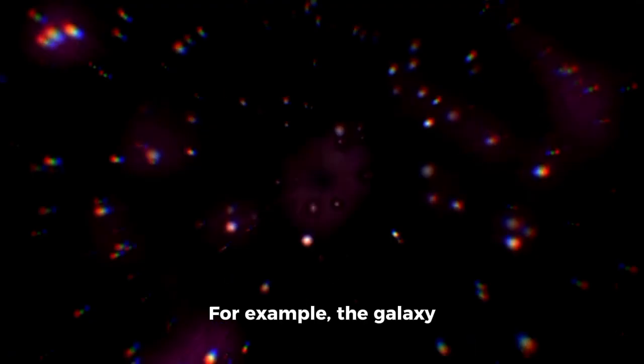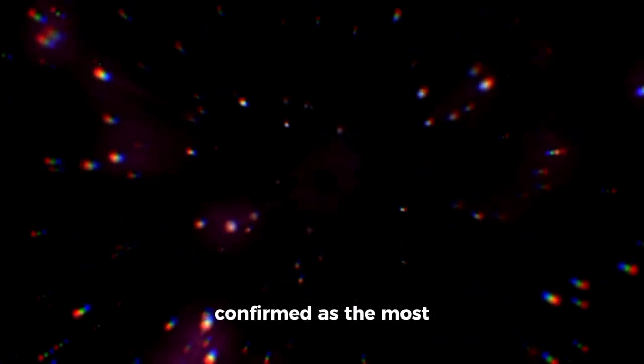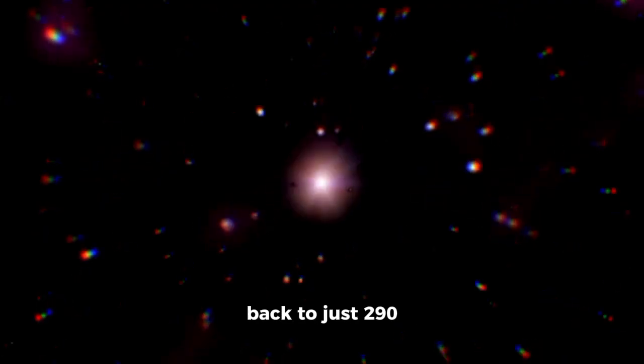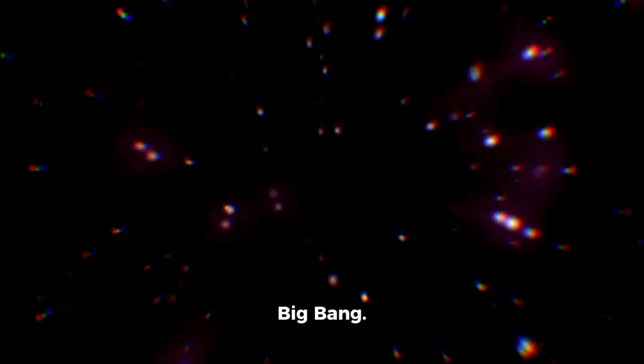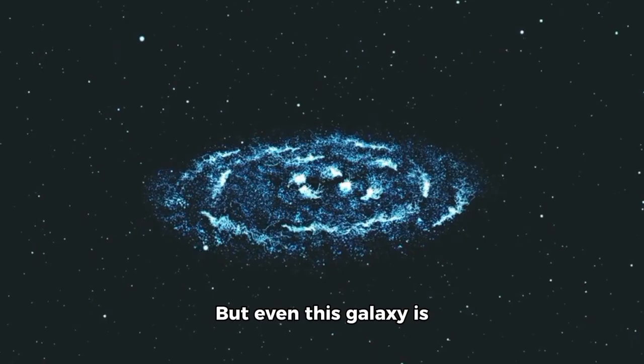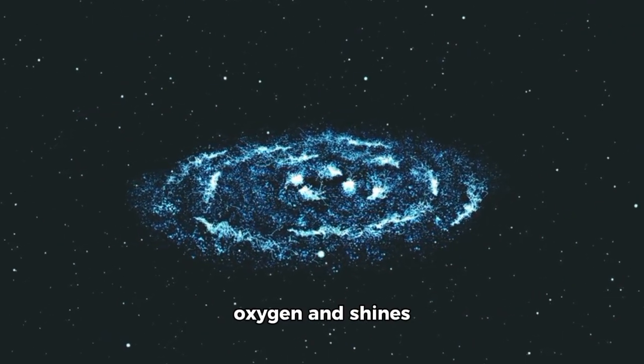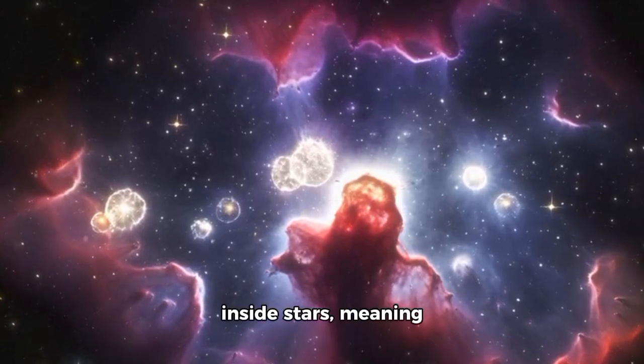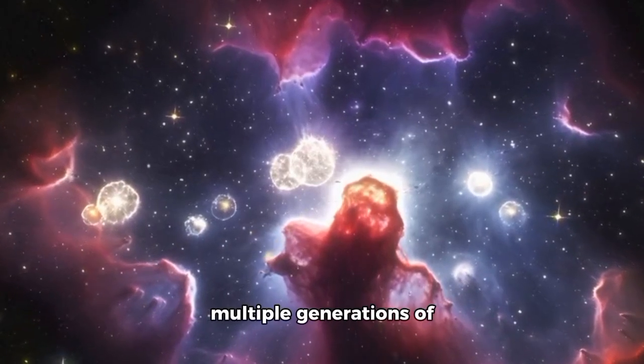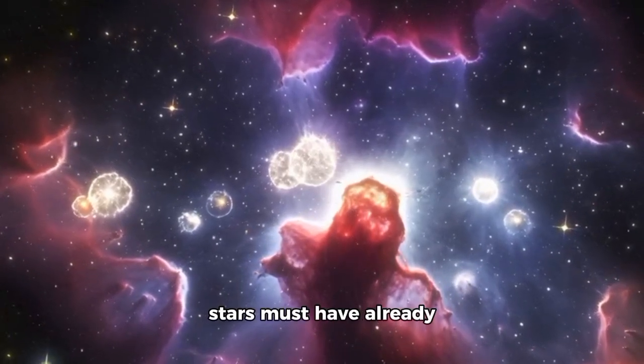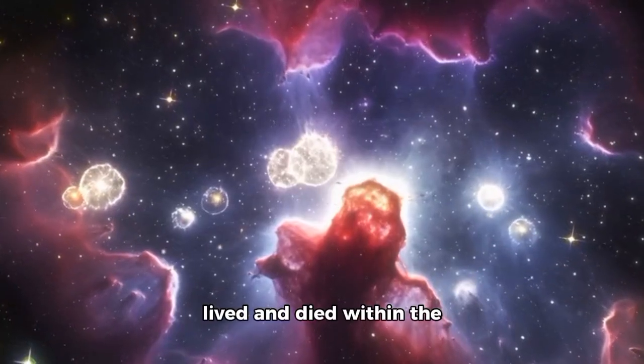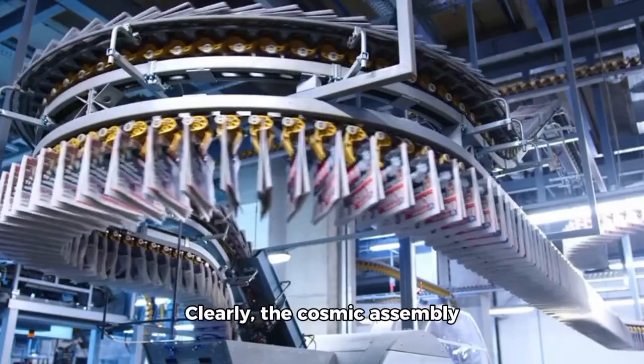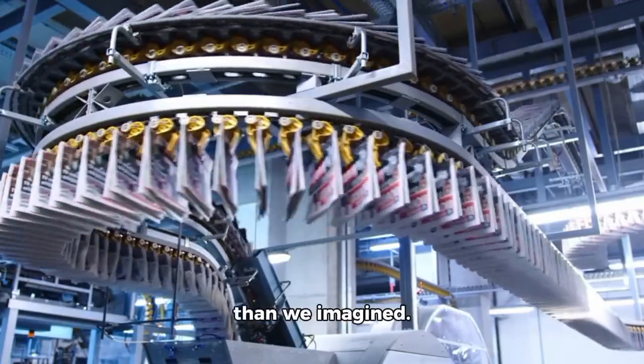For example, the galaxy JADES-GS-z14 has been confirmed as the most distant ever observed, with its light dating back to just 290 million years after the Big Bang. But even this galaxy is puzzling. It contains oxygen and shines surprisingly brightly. Oxygen must be forged inside stars, meaning multiple generations of stars must have already lived and died within the Universe's first few hundred million years. Clearly, the cosmic assembly line was running far faster than we imagined.